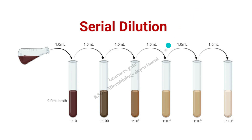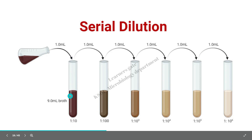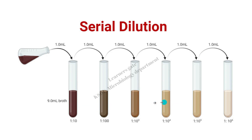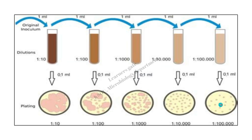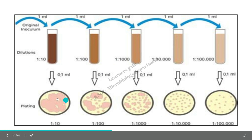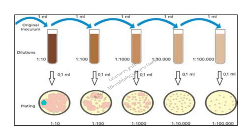You have the sample and you start diluting it. This is 10 to the power of minus 1. From here you transfer 1 ml to 10 to the power of minus 2, minus 3, minus 4, minus 5, minus 6. The concentration starts decreasing and once you plate it on the nutrient agar, at 10 to the power of minus 1 you can see completely cloudy or dense colonies. The colonies become progressively more segregated and then uniformly distributed as the concentration decreases.